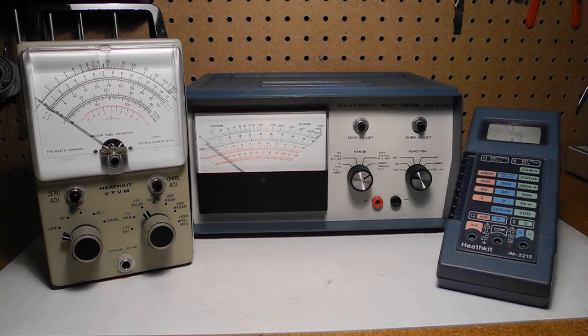The vacuum tube voltmeter or VTVM used tube circuitry to improve the sensitivity and accuracy of measurements. By the late 1960s, integrated circuits made it feasible to implement a digital multimeter, where the measured value is shown as numeric digits rather than being read off of an analog meter.